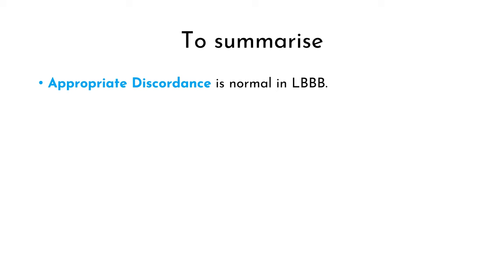To sum it all up, Sgarbossa Criteria is positive if any one of the following is present: concordant ST elevation in any lead, concordant ST depression in V1 to V3, or excessively discordant ST elevation which is 25% or more of the preceding S wave in any lead. Remember, the ST segment deviation has to be only 1 mm and present in only one single lead. If any of these three findings are present on an LBBB ECG of a patient with chest pain, there is a second pathological process causing further ST deviation — that is acute MI. The American College of Cardiology guidelines on the evaluation of chest pain in ED now recommend using the Smith modified Sgarbossa Criteria, published less than a year ago.